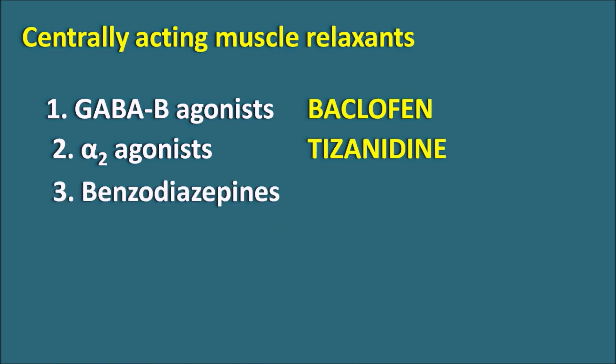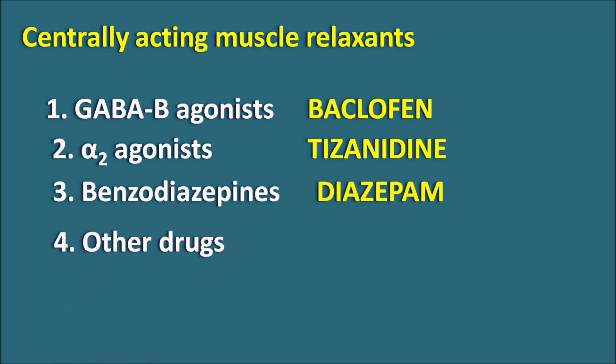The third class is the benzodiazepines. Benzodiazepines produce anxiolytic, sedative, and hypnotic effects, and apart from these they can also produce anticonvulsant and muscle relaxant activities. One benzodiazepine, diazepam, can be used as a skeletal muscle relaxant. Other drugs include chlorzoxazone and related drugs, which are mainly used as adjuvants to produce muscle relaxation.